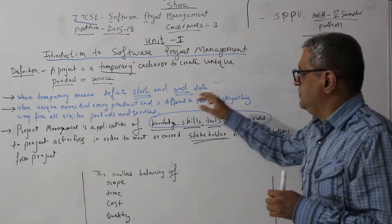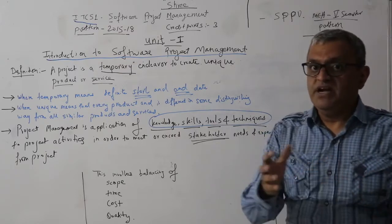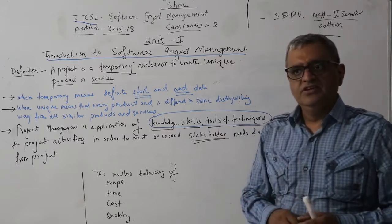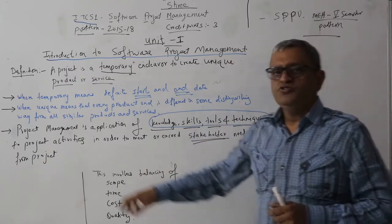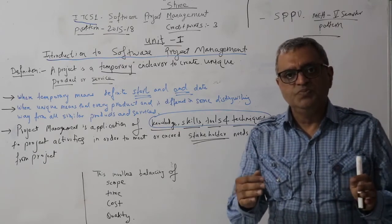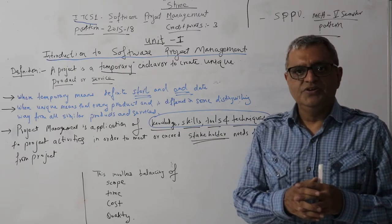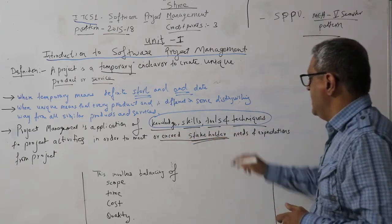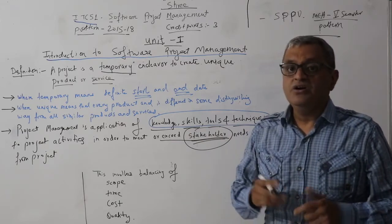Those activities are managed by putting knowledge, skills, tools, and techniques. A civil engineer, who is going to be the manager of that project, will put his experience, his knowledge, his skills, get the required tools and techniques, and deploy resources to take those project activities to completion. Completion here means completing as per the expectations of the customer, and in the 21st century, customers always want something more than what they asked for — hence the phrase 'exceed stakeholder needs and expectations,' where stakeholder here is the customer.